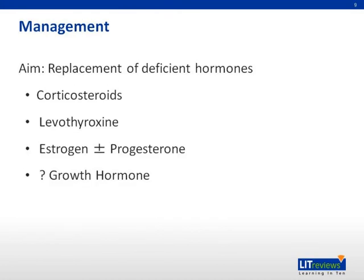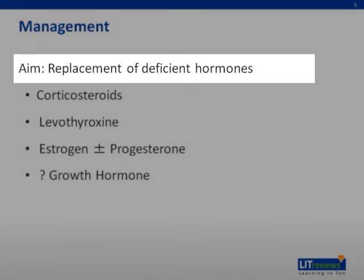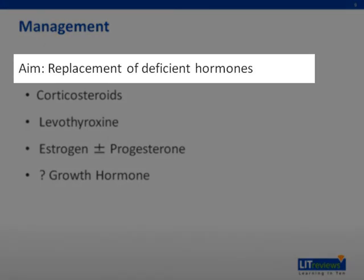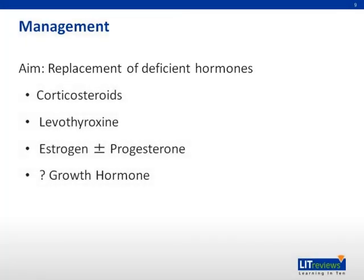Sheehan's syndrome is a problem of pituitary insufficiency. Thus, the main aim of treatment is to replace the deficient hormones. This is important not only to correct the endocrine imbalances, but also to reduce morbidity and mortality of hypopituitarism. As ACTH deficiency will lead to adrenal crisis, the most urgent treatment for a patient with severe hypopituitarism and fluid depletion is to administer glucocorticoids such as cortisol and prednisone. Hypothyroidism is treated with levothyroxine; however, as this drug can precipitate an acute adrenal crisis, it is important to start treatment with glucocorticoids prior to its administration.